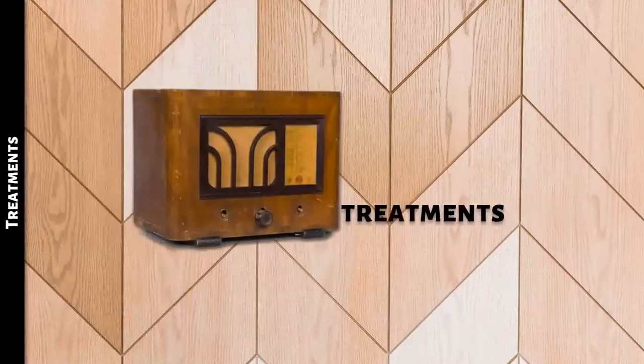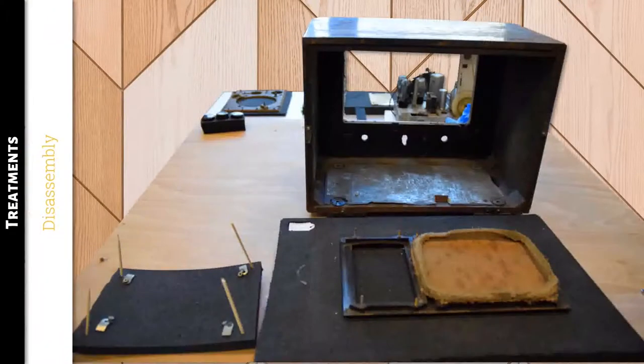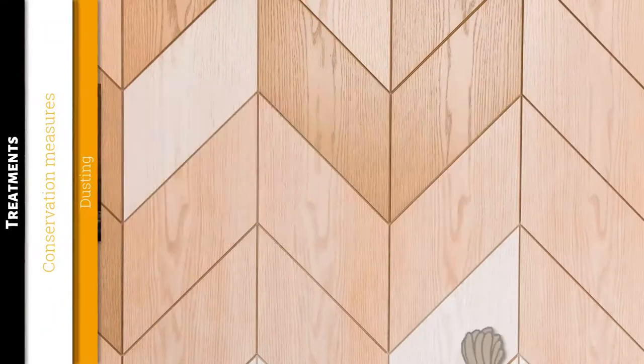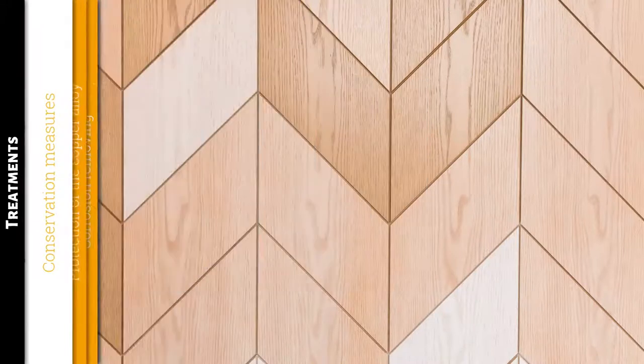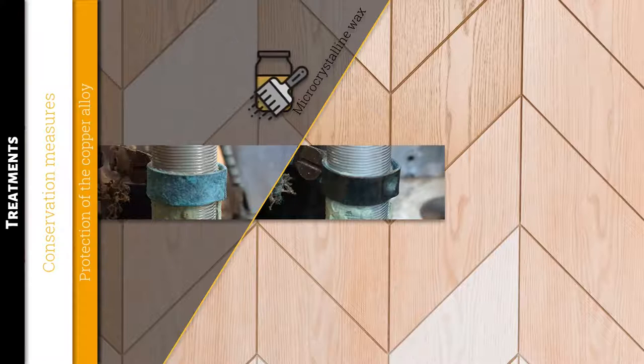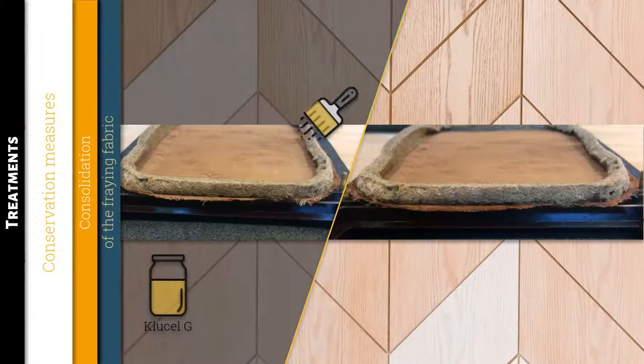The radio has alterations and must be treated. First, I took apart the radio and conservation measures start with dusting. I mechanically remove corrosion. After, I apply microcrystalline wax as protection for metal. I stabilized the frayed textile with Clusil J.